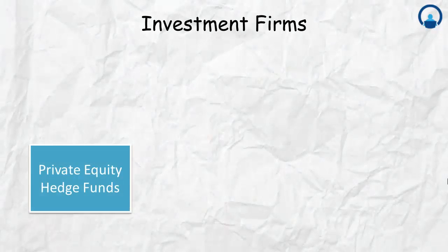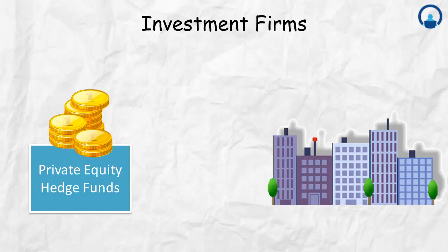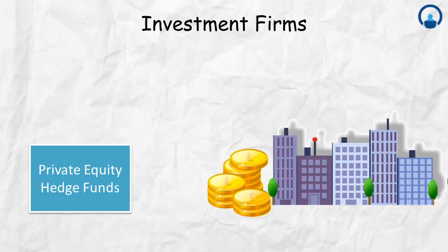Finally, investment firms include two main categories: private equity firms and hedge funds. They raise capital and use it to buy companies or make investments. At the end of a period, they earn a return — keeping a portion for themselves and returning the rest to whoever provided the capital. Unlike insurance firms, they don't collect insurance premiums; they raise money solely to invest in other companies.